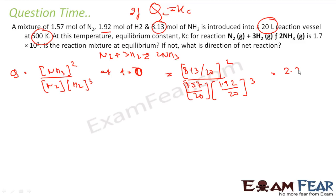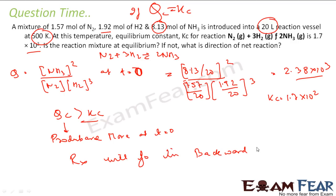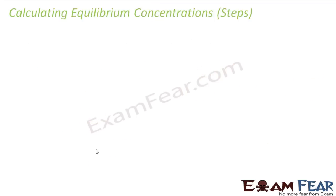Solving this, Qc comes out to be 2.38 × 10⁴. Comparing with Kc = 1.7 × 10², clearly Qc is not equal to Kc, so the reaction is not at equilibrium. Since Qc > Kc, that means at T = 0 the products are more than they would be at equilibrium. Therefore, the reaction will proceed in the backward direction to reduce the amount of ammonia and restore equilibrium.